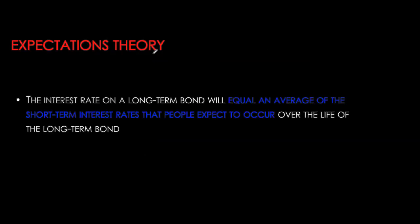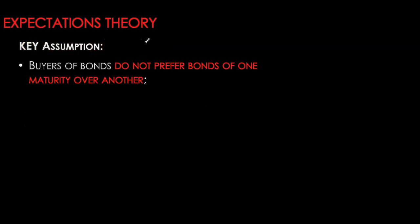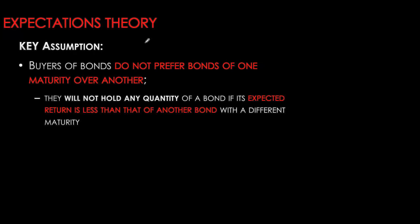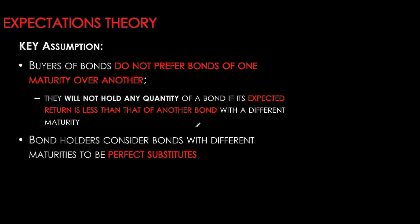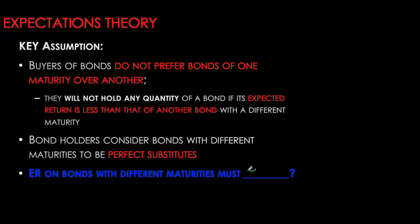The expectations theory is a simple idea: the interest rate on a long-term bond equals the average of the short-term yields that people expect to occur over the lifetime of that bond. The key assumption is that people do not prefer bonds of one maturity over another — you only care about expected return. If the expected return on one bond is less than an alternative, you won't hold it. For you to hold both types, their expected returns must be identical.